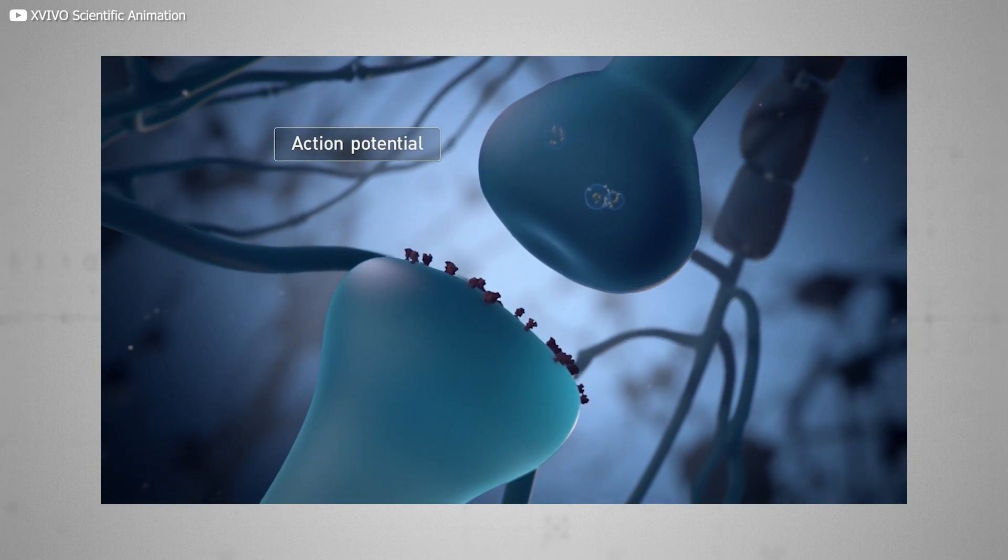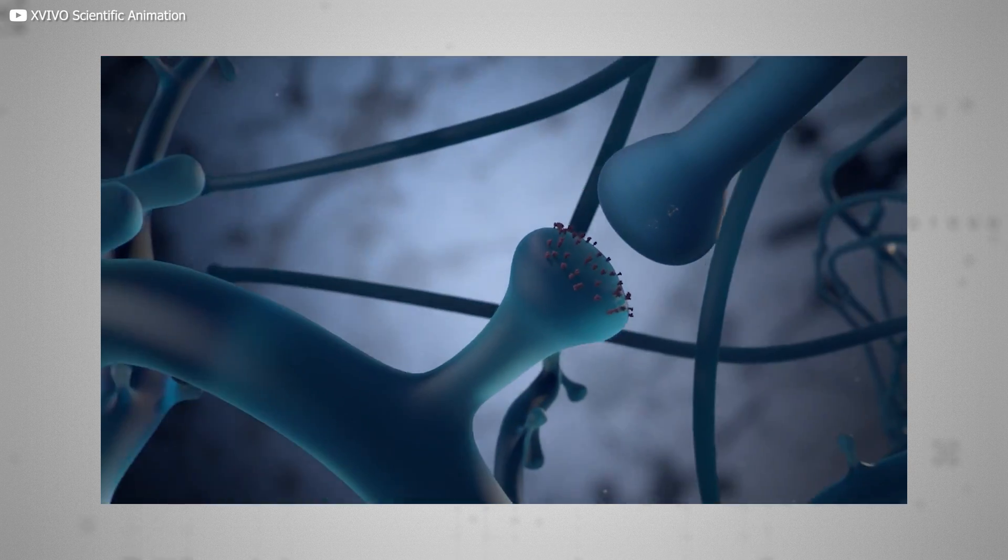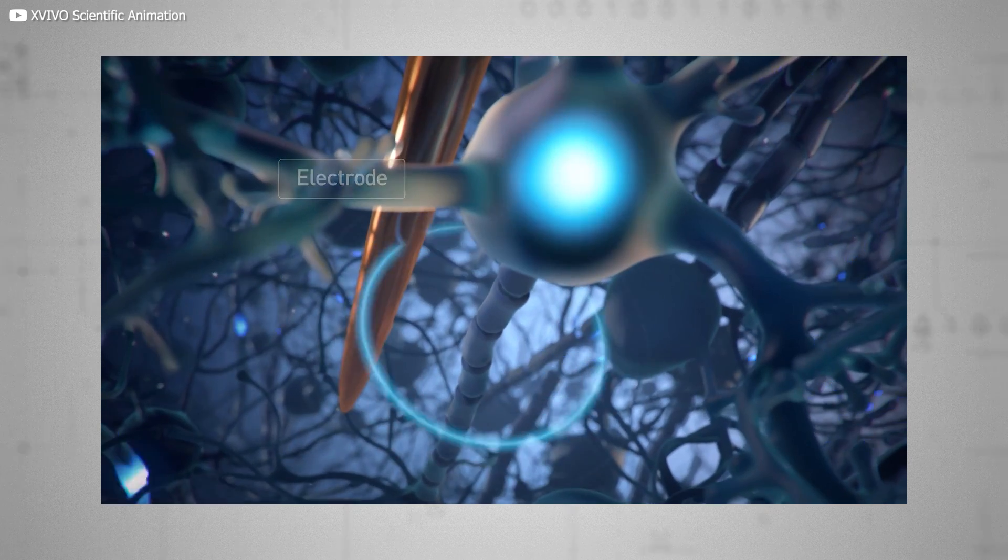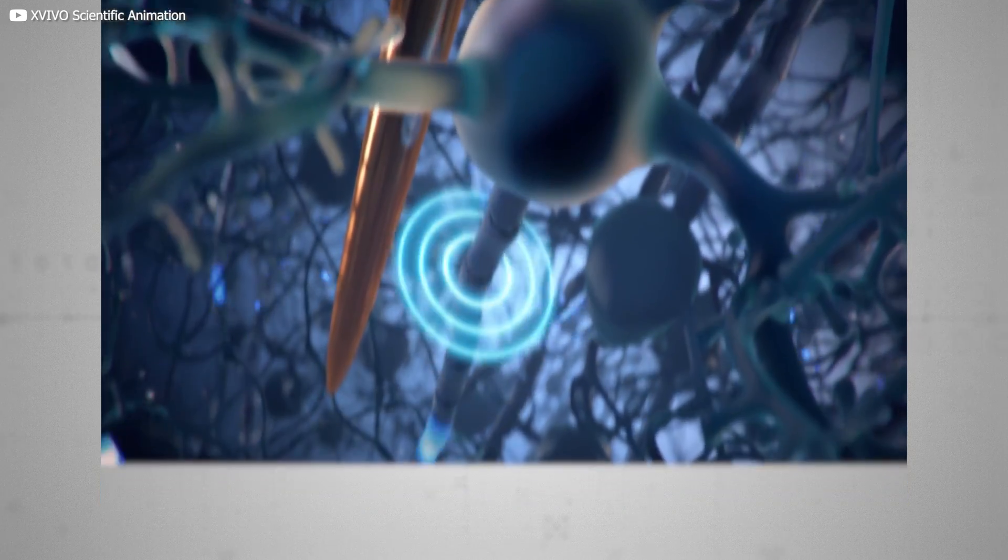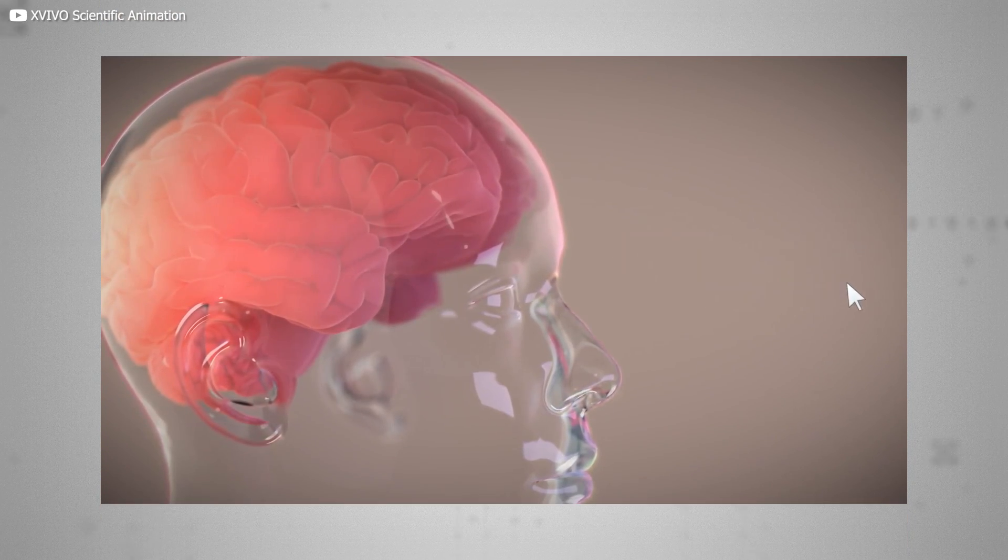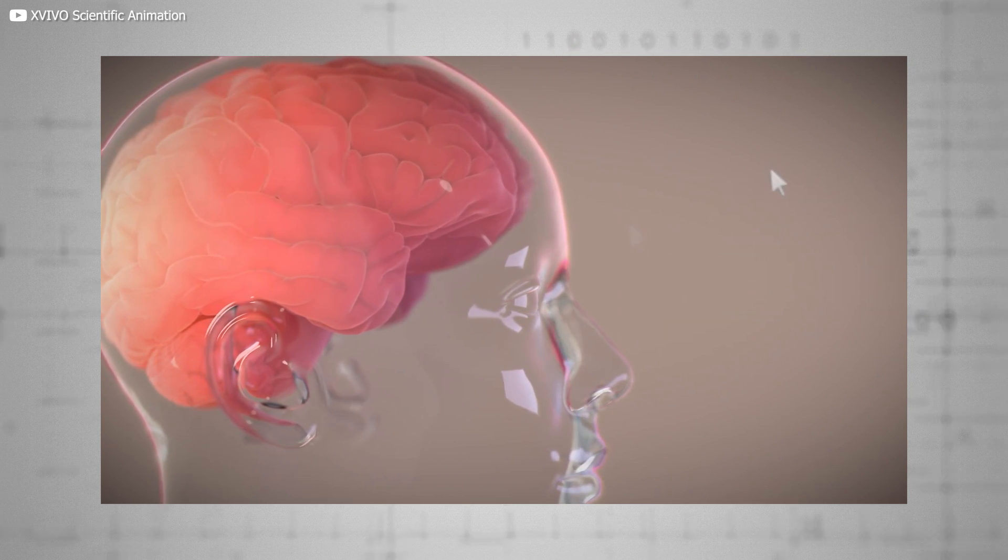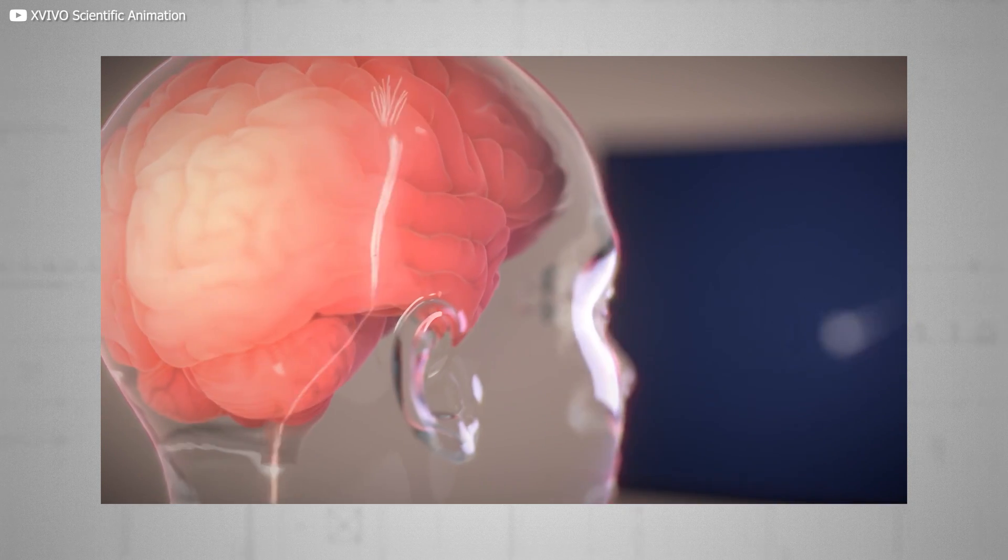Neuralink's nifty gizmo incorporates over a thousand minuscule electrodes, each one just a tenth of the width of a human hair. These electrodes splay out into your brain tissue, passing near enough to those chatty neurons to overhear their activity. This activity is beamed directly to an external device, which will most likely be fitted over your ear.